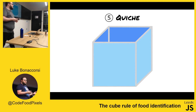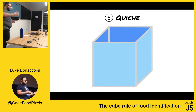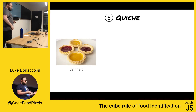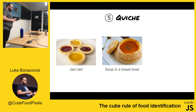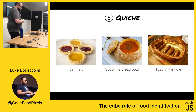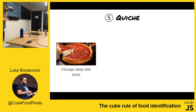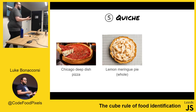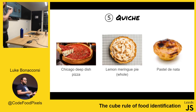And then we have quiche, which is surrounded on five sides — so four sides and either the top or the bottom. Examples of this are jam tarts, soup in a bread bowl, and toad in the hole. We also have Chicago deep dish pizza — it's not a casserole, it's a quiche. A whole lemon meringue pie, so you can't slice it. And a pastel de nata.